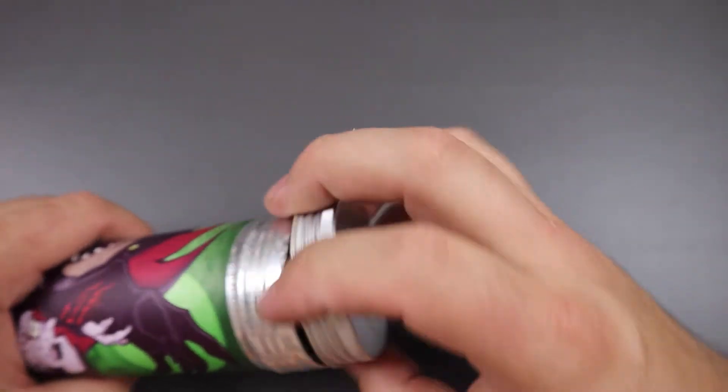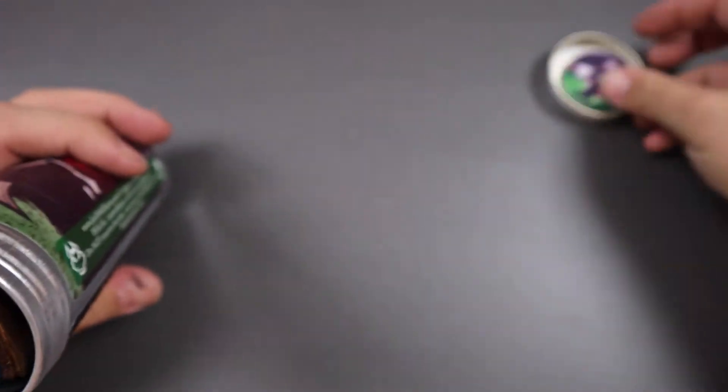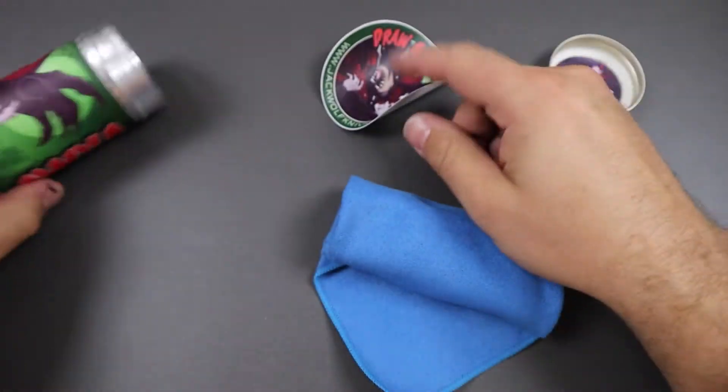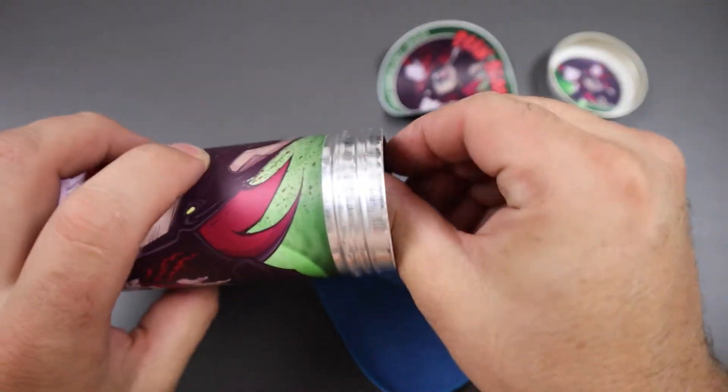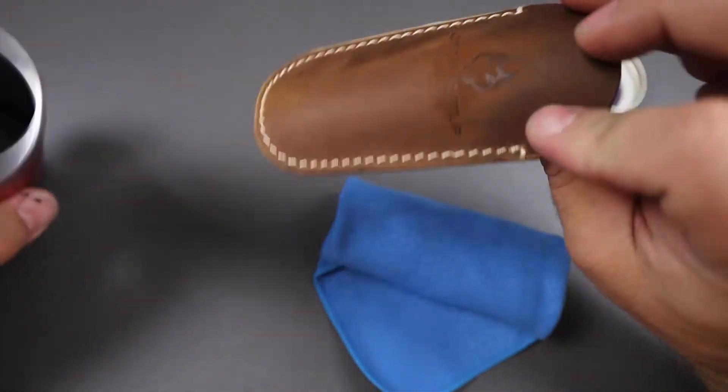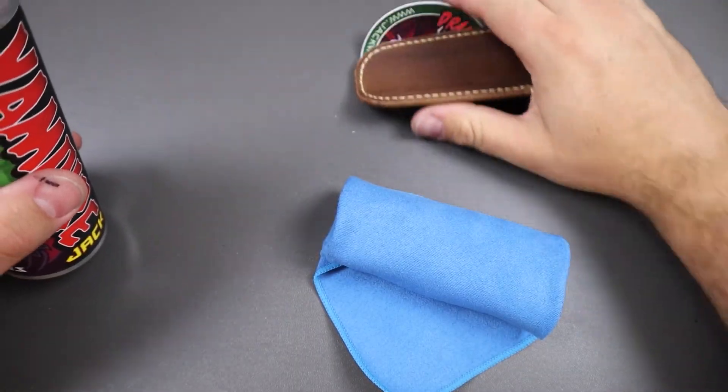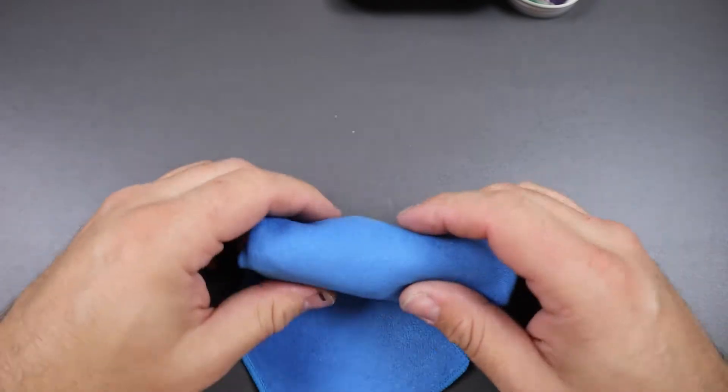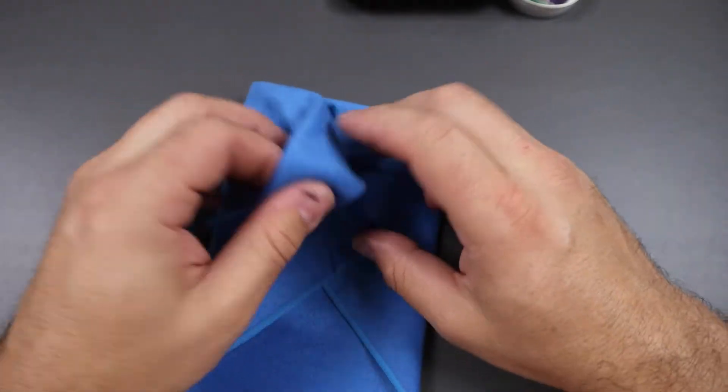and open this guy up. We got a pog, we've got the cloth which has the knife, and I believe we got some stickers. We've got a pocket slip. I believe all this stuff comes with all of the knives. All right, let's go ahead and open this guy up.